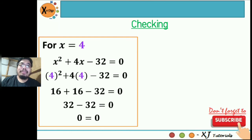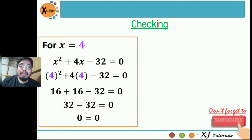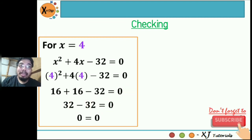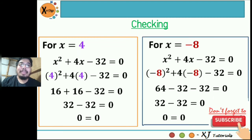For x equal to 4, substitute into the original equation: x squared plus 4x minus 32 equals 0. That gives 4 squared plus 4 times 4 minus 32 equals 0. The square of 4 is 16, and 4 times 4 is 16. So 16 plus 16 minus 32 equals 0, which is 32 minus 32 equals 0. So 0 equals 0 — this is a solution.